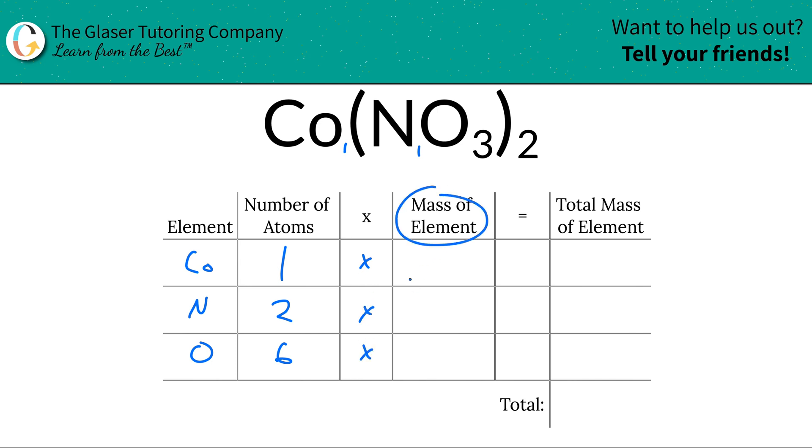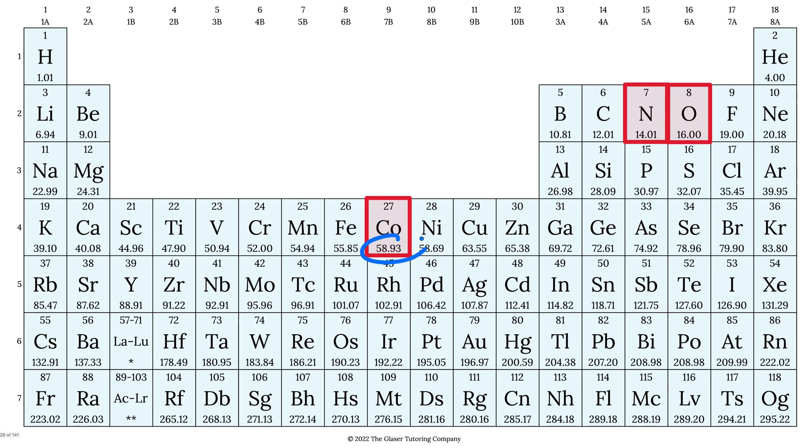Now you would look up the mass of each element on the periodic table. So we got cobalt here, 58.93, nitrogen and oxygen's masses accordingly. Now the masses here are in grams per mole or AMU, depending upon whether you're talking about molar mass or molecular mass.